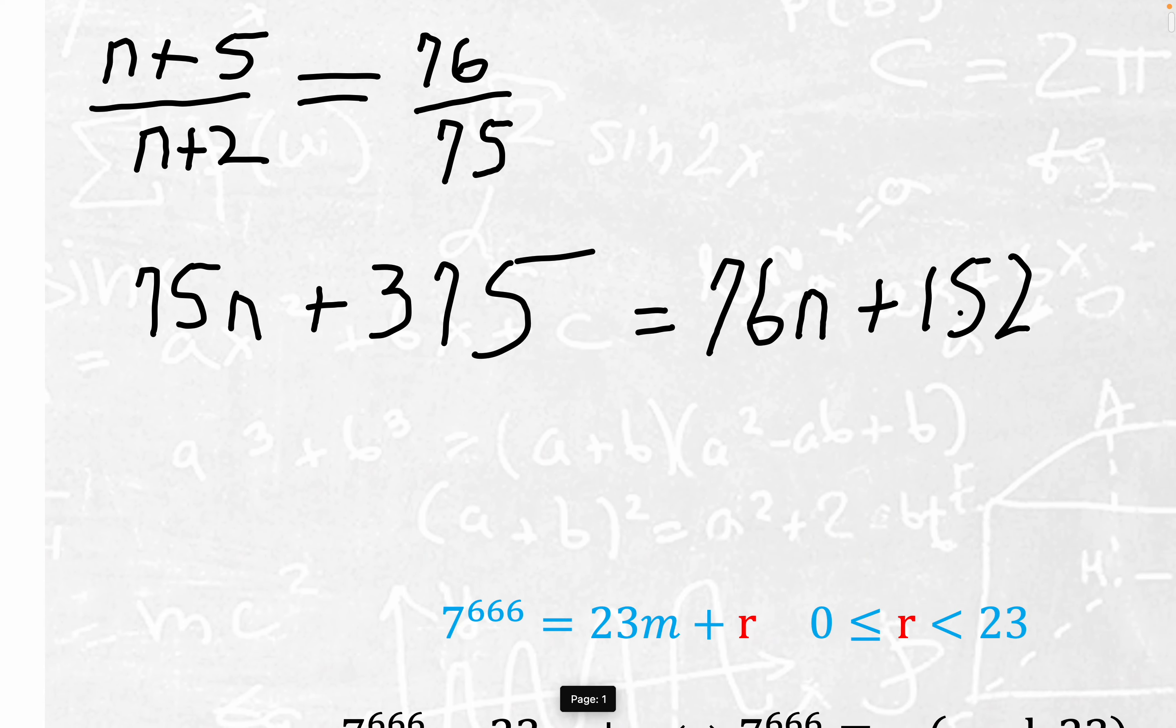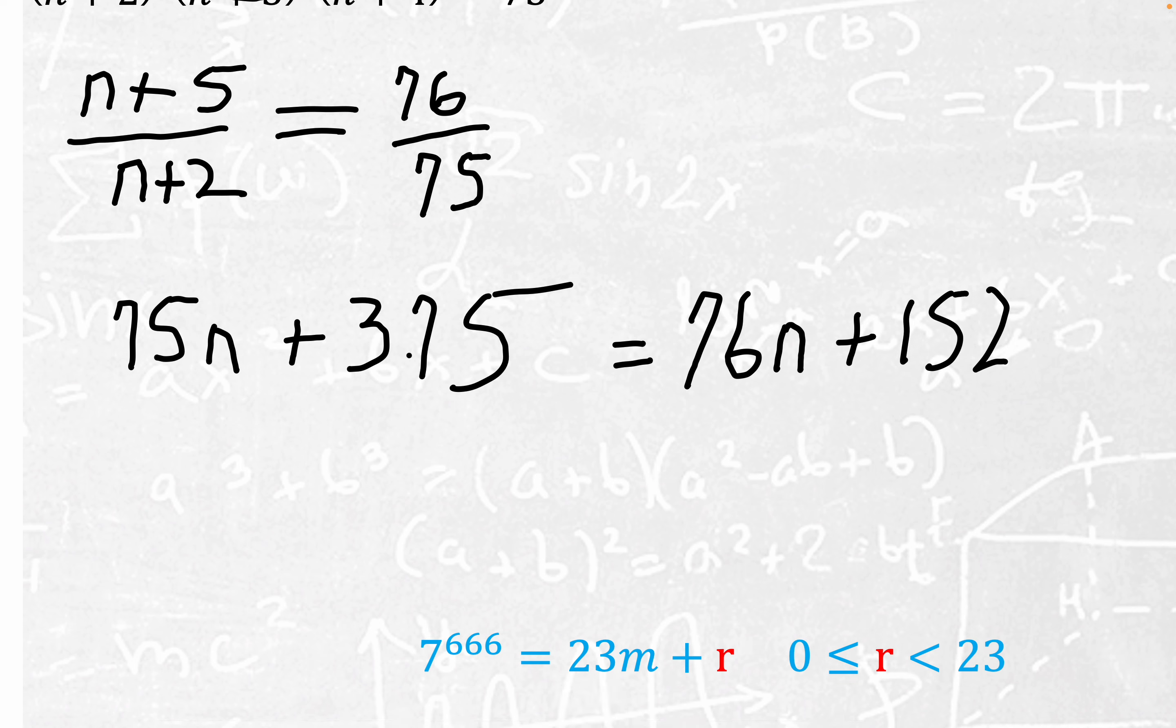Now carrying on right here, we'll end up with, if you subtract, I'll subtract 75n from both sides, so we'll get n right here.